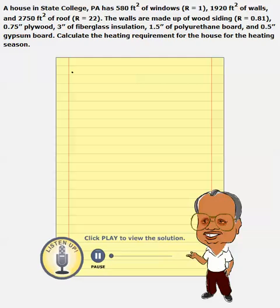In this problem, we are trying to calculate the heat loss from the entire house — heat loss through windows, heat loss through roof, heat loss through walls — and add them up.